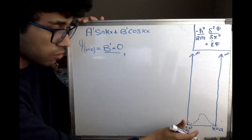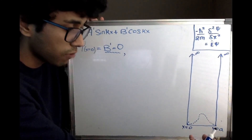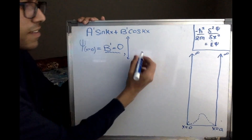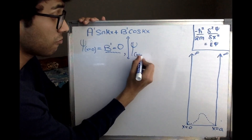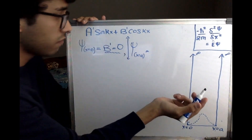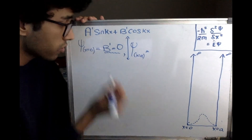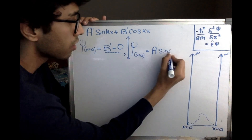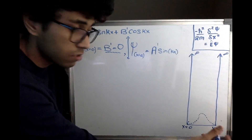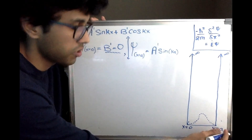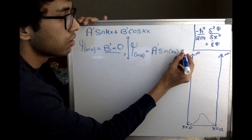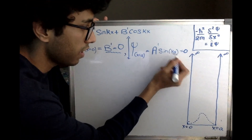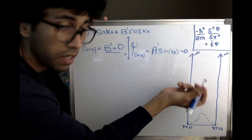Now let's calculate ψ at x = a — the other boundary, with an infinite potential barrier. Since we know B′ = 0, ψ at x = a is simply A′ sin(ka). But ψ at x = a is also 0, since it is a boundary condition and there is no probability of finding the particle at the boundary. So A′ sin(ka) = 0. This conclusion gives us a lot of information about the term ka.